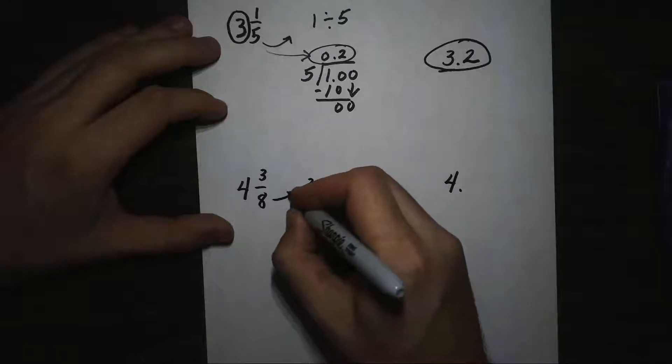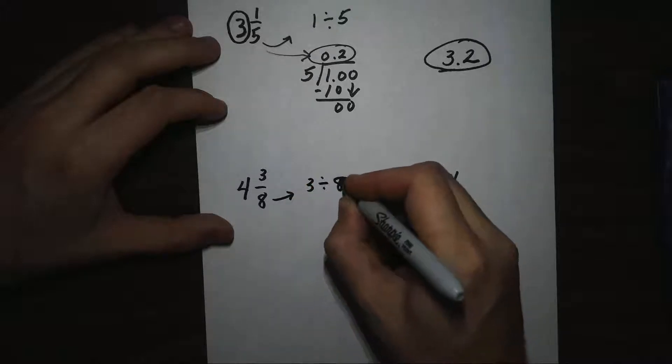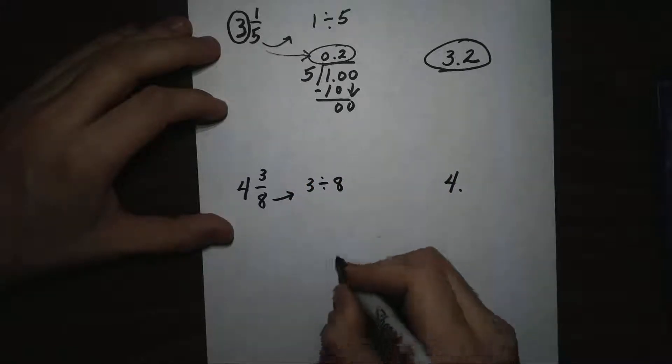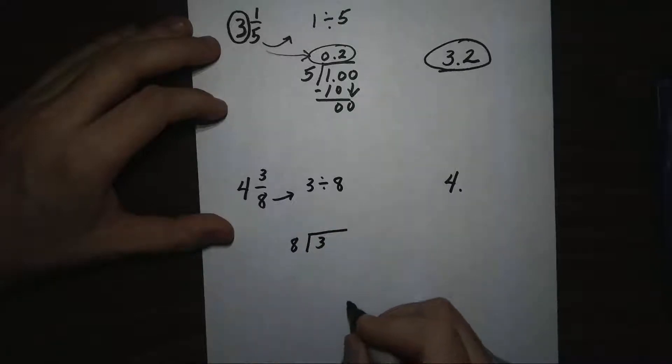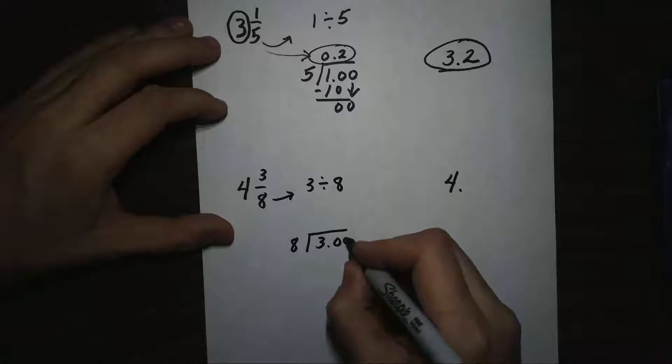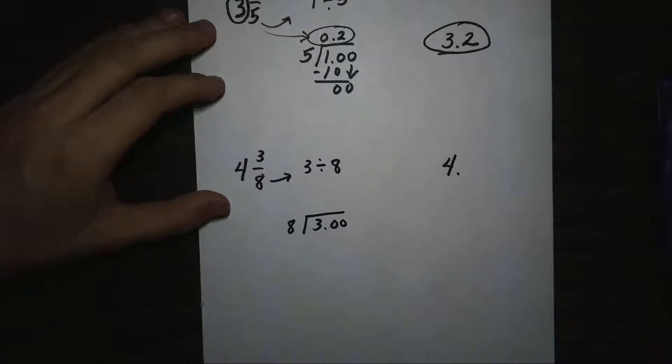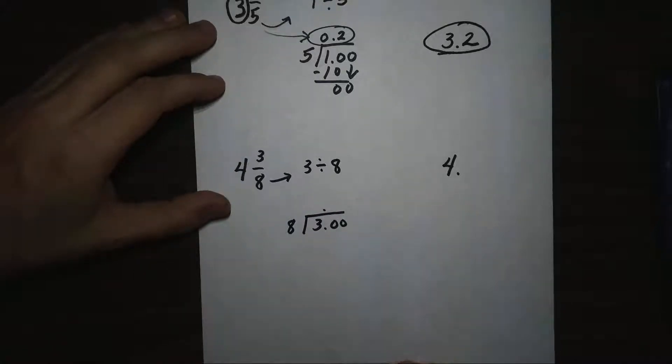So we're going to write this as a division problem. This would be 3 divided by 8. With long division, 3 divided by 8. Give it a decimal and some zeros. Bring your decimal up and start dividing.